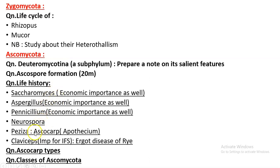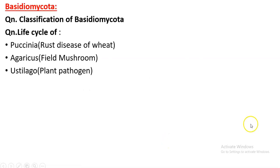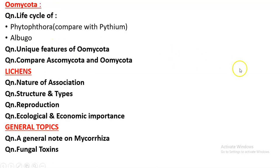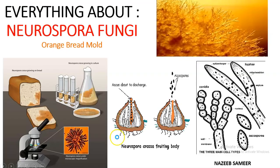After that, Peziza and Claviceps remain. Under Basidiomycota, we have to see Paxinia, Agaricus, and Ustilago. Paxinia is very important. Under Oomycota, we will be seeing Phytophthora and Albugo. Oomycota is the phylum coming under fungi-like organisms. Then we will be seeing lichens, Mycorrhiza, fungal toxins, and other such topics.